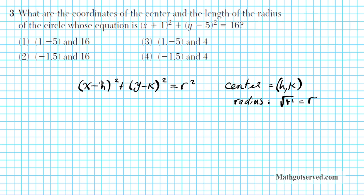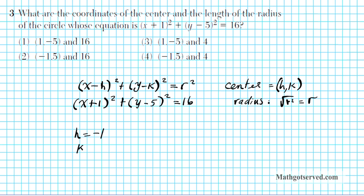The center is (h, k) and the radius is r, the square root of r squared. Note that the minus signs mean you take the opposite of the number next to each variable to find h and k. In our equation (x plus 1) squared plus (y minus 5) squared equals 16, h is the opposite of positive 1, which is negative 1, and k is the opposite of negative 5, which is 5.